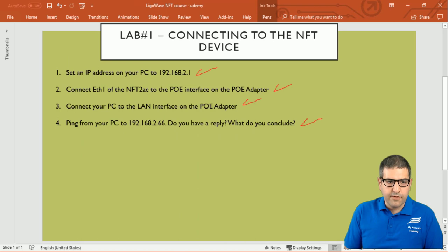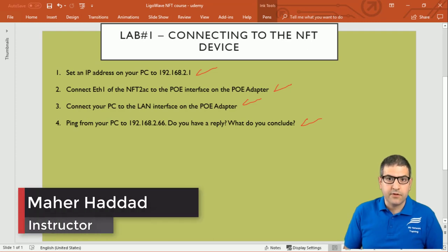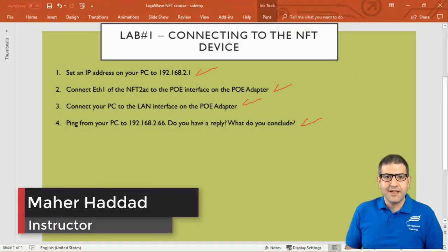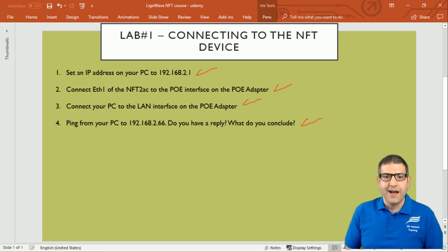We have completed point number four and confirmed that the DHCP fallback IP address is 192.168.2.66 — the address needed to access the router and perform configuration. This was a short but very important lab showing how to connect to the NFT device. I hope this was informative, and I will see you in the upcoming lecture.